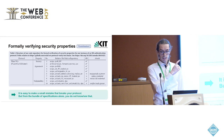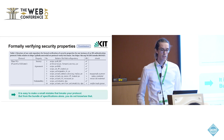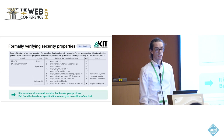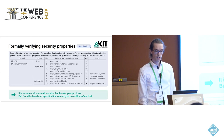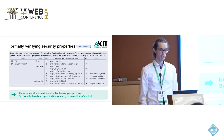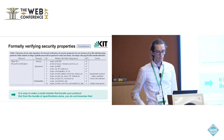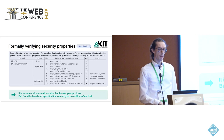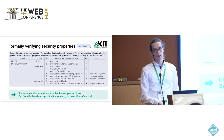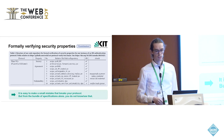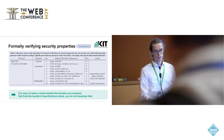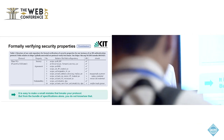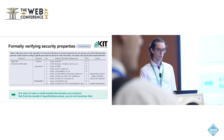For unlinkability, we see there can be partial unlinkability in the model. But for other subproperties, for example, we see that the verifier may track a prover.